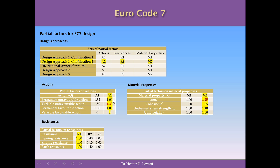For actions: permanent unfavorable actions have a coefficient of 1, so no changes. Permanent favorable actions also have a coefficient of 1. For variable favorable actions the coefficient is 0, so we do not take them into account since they are not permanent. For variable unfavorable actions — which is the case for our load Q in this problem — the coefficient is 1.30, so we increase that action by 30 percent to be farther from failure.